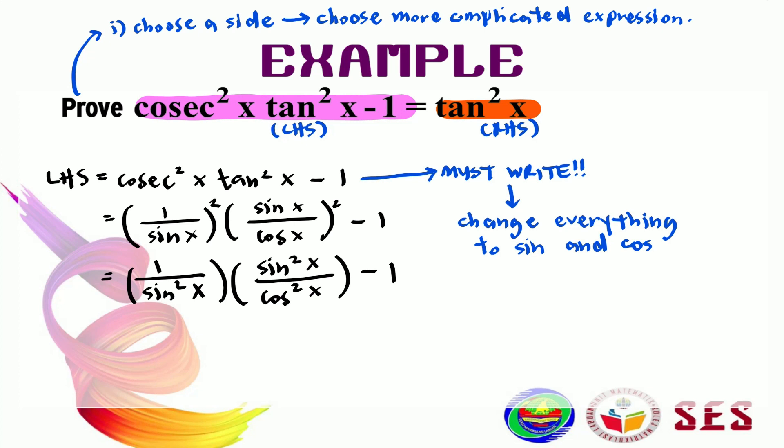And we can see that we can cancel this sine. And now, we are left with 1 over cos squared x minus 1. And we know that 1 over cos is equal to secant squared x minus 1. See, now we have square here. At this step here, we can see that this is one of the identities.